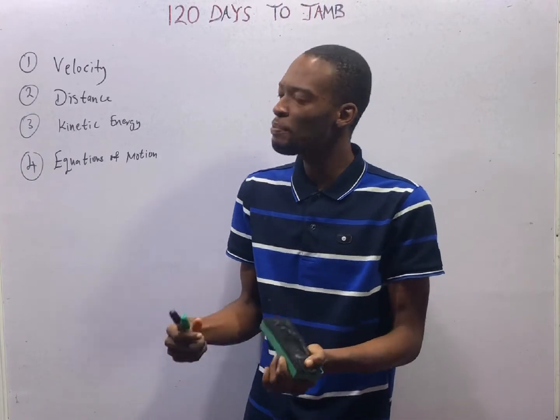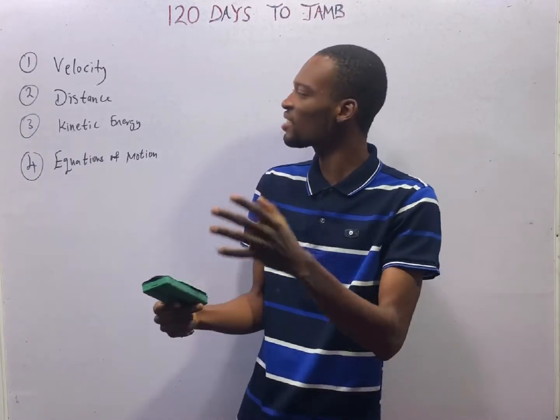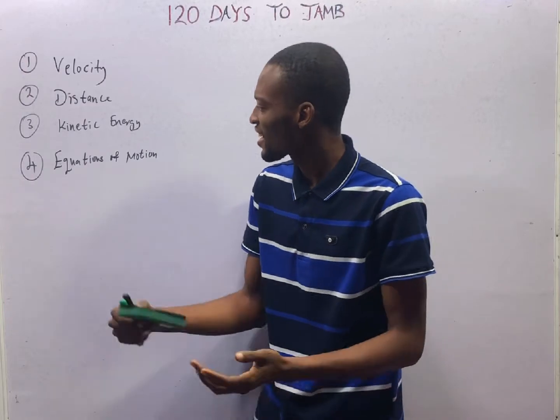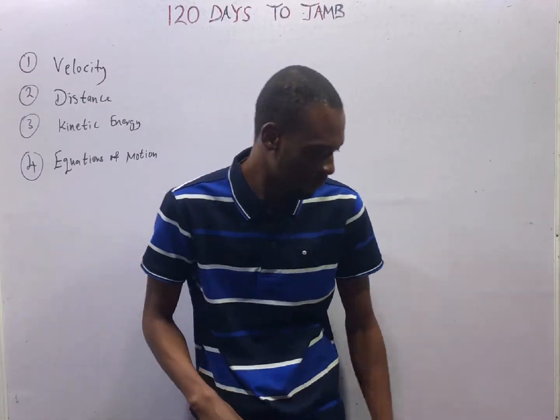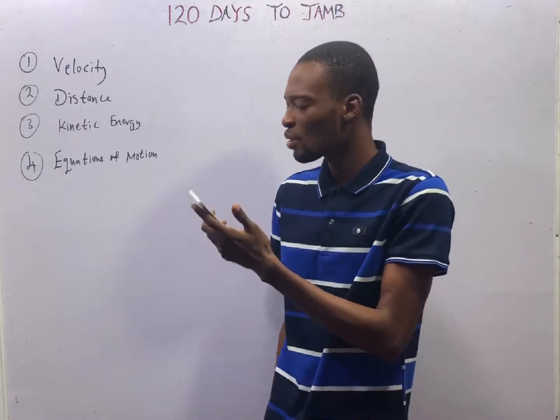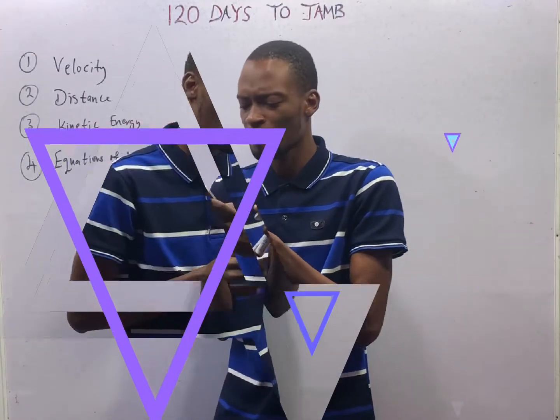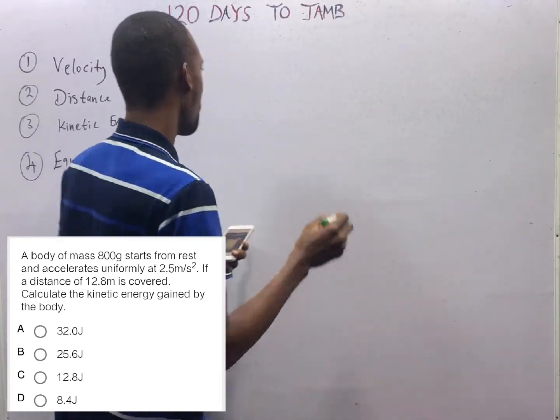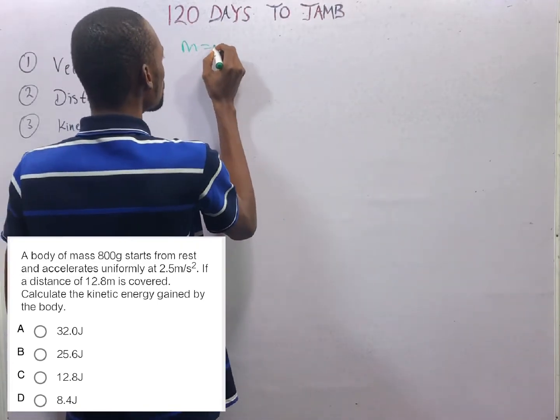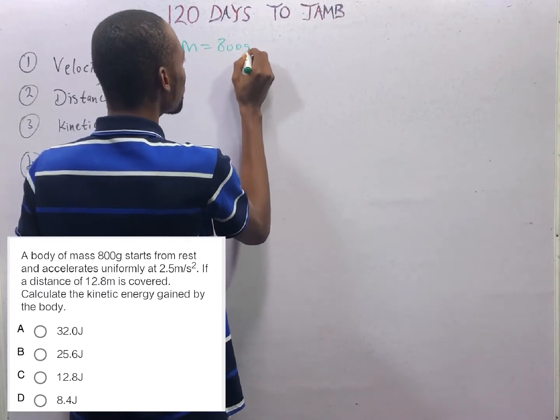In this episode, you will learn or understand velocity, distance, kinetic energy, and equations of motion. This is the question we shall be taking a look at: A body of mass 800 grams, m = 800g.